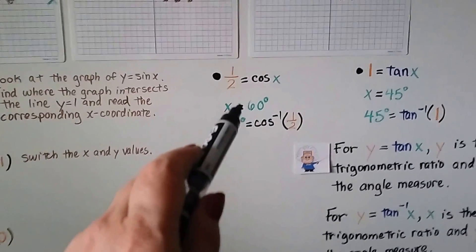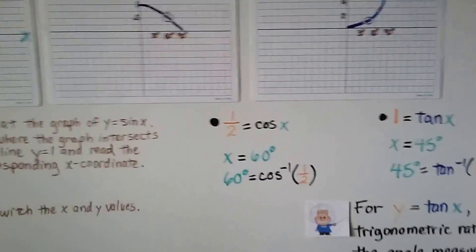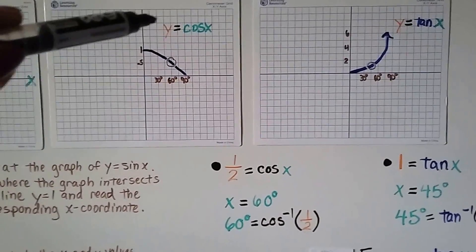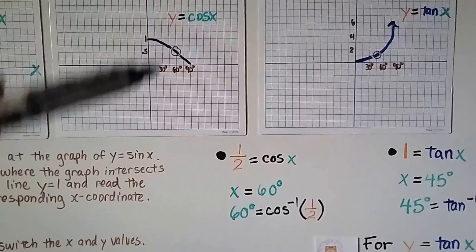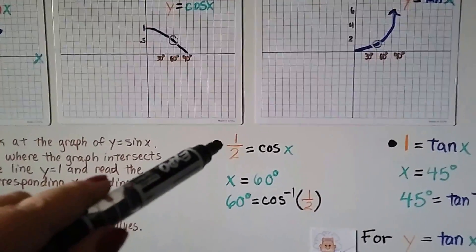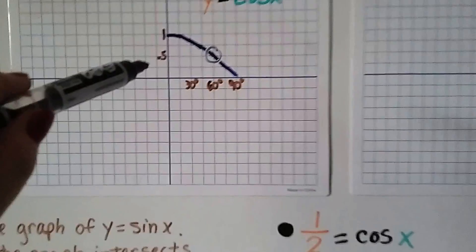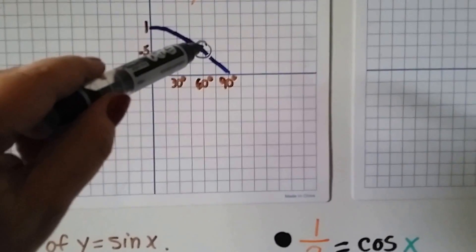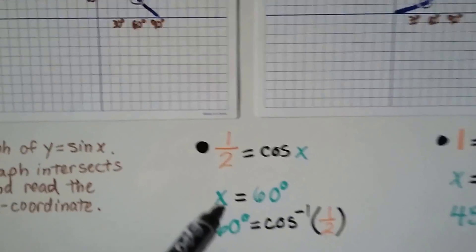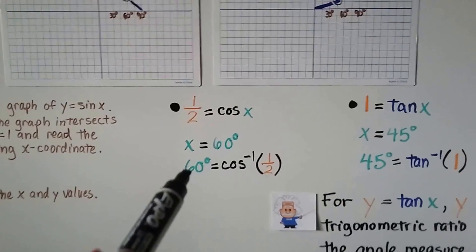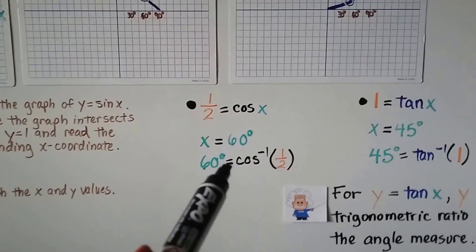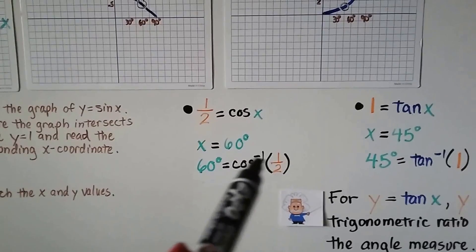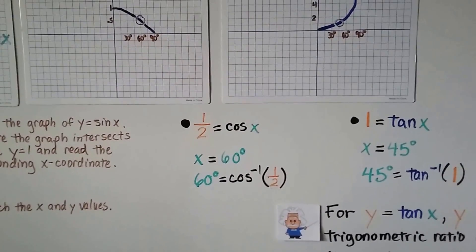Let's try this one. We have half equals the cosine of x. We look at the graph that has y equals cosine of x. We look for where the y value is half. That would be right here. And we look at the corresponding x value is at 60 degrees. So, x equals 60 degrees. We can write 60 degrees equals the inverse cosine of 1 half.